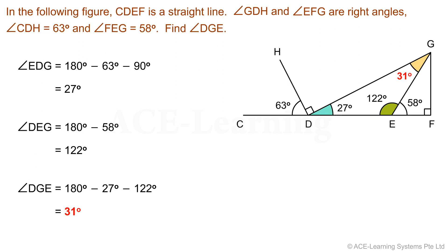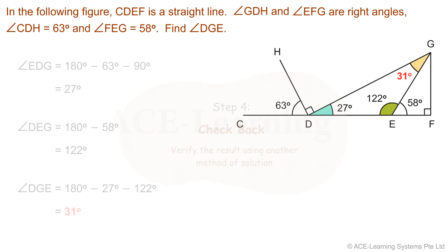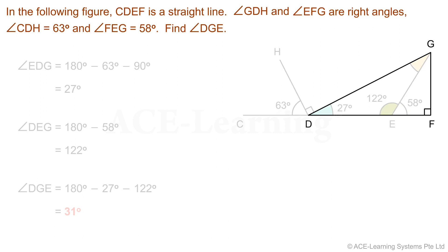Is our answer correct? Let's proceed to Step 4: Check back. Verify the result using another method of solution. In triangle DGE, notice that angle DGF is the sum of angles DGE and EGF. If we know the angle measurement of angle EGF, we can find angle DGE. So we need two pieces of information: the angle measurements of angle DGF and angle EGF.